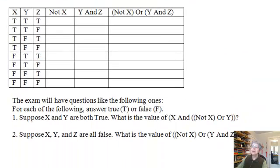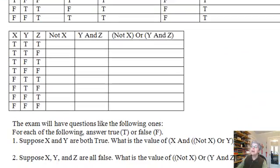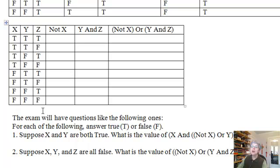Let's look at our third example here. Now here we have three variables. So every time I add a variable I double the number of combinations of values that I have to consider. It's just like adding a bit. So here let's start again with the first row. I have three trues and my expression is not x or y and z. I have the or of two expressions so I'll compute the values of the two expressions first and then do the or.